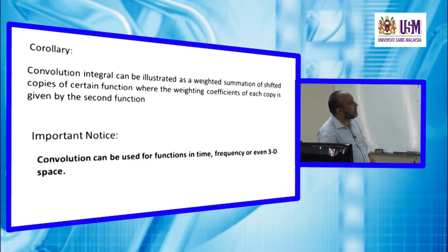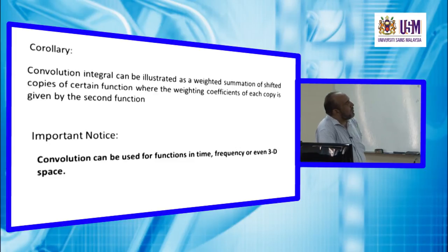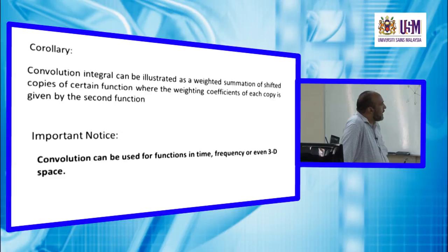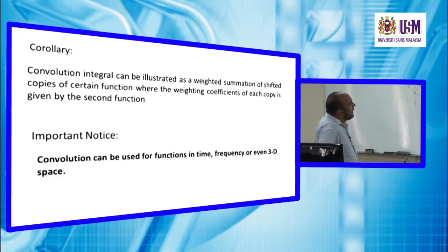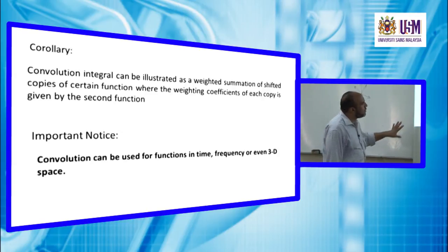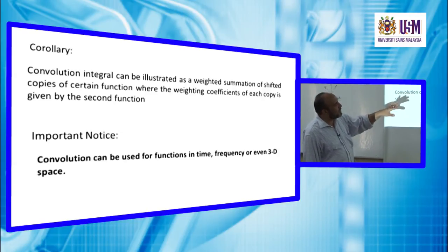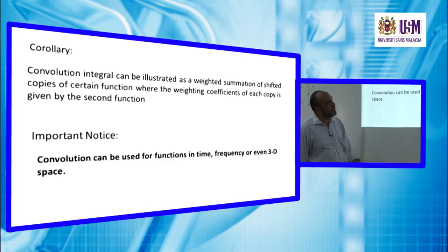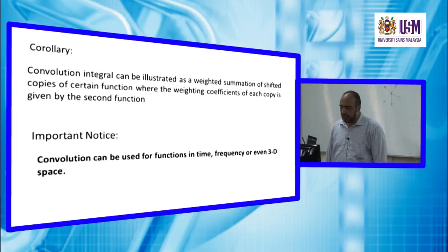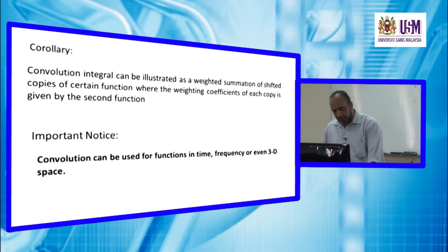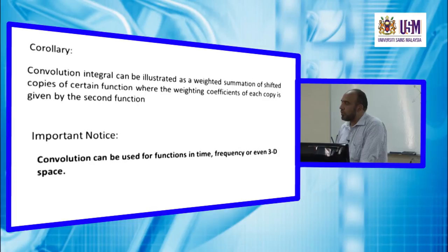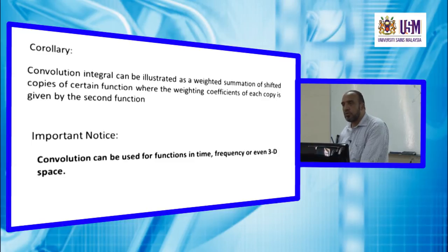The convolution integral can also be illustrated as a weighted summation of shifted copies of a function. At each point we have a copy of the function, weighted by a coefficient from the other function, and then summed. The weighting coefficients of each copy are given by the second function. Convolution can be used for functions in the time domain, frequency domain, and 3D space — for seismic in time and for potential fields and digital image processing in space.